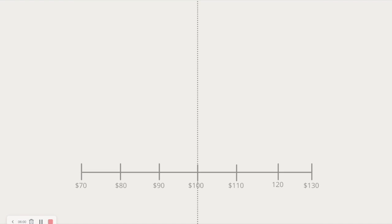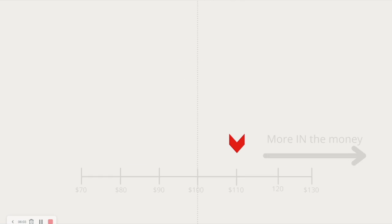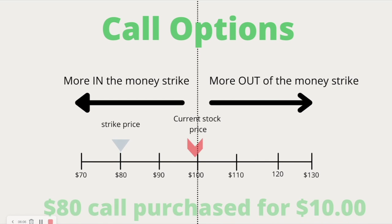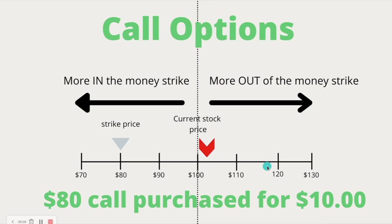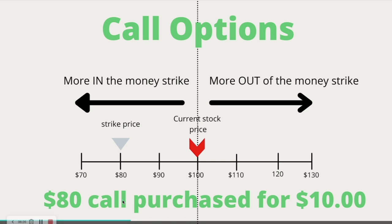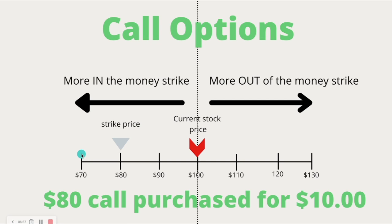So out of the money options — going back to our call option number line — an out of the money call option: the one with the smallest Delta is going to be the $130 call, because it's the furthest out of the money. The call option with the highest Delta, closest to 1 (or 100 using the multiplier), would be the lowest strike price. And as the stock moves up — if we bought the $100 strike — as the stock price moves up, that Delta becomes more in the money and increases more and more.